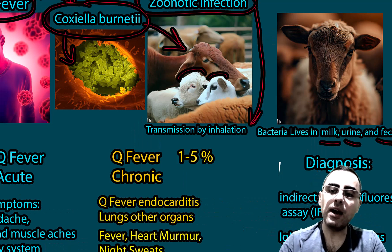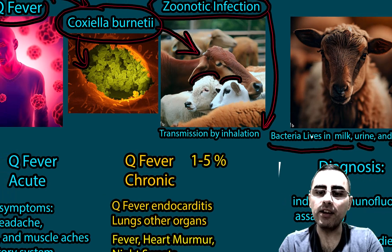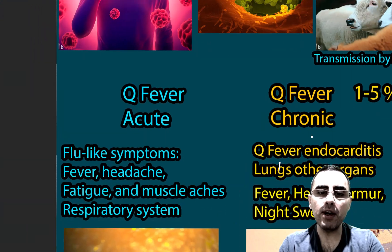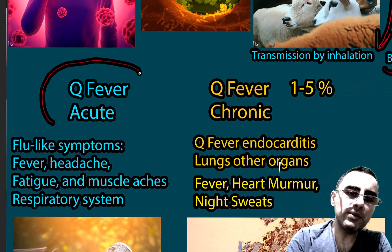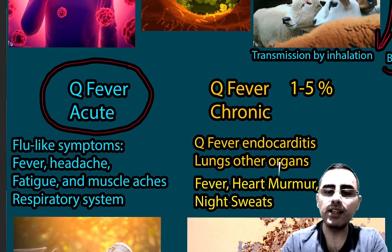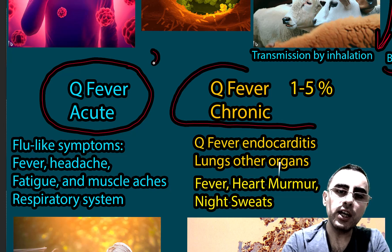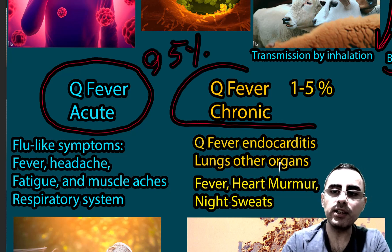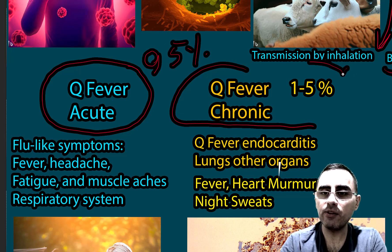People are at high risk when they live or work near farms and near these cattle. Q-fever has two forms. The first form is acute Q-fever, and the second is chronic Q-fever. Acute is the most common, happening in 95% of cases, while the chronic form occurs in 1–5% of cases.